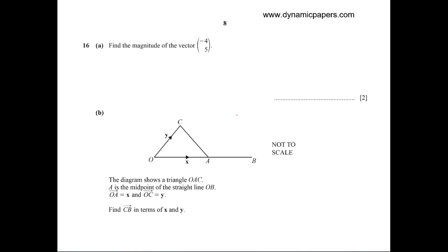Question 16a: Find the magnitude of the vector. To find the magnitude of the vector, we calculate negative 4 to the power of 2 plus 5 to the power of 2, which equals root 41, approximately equal to 6.4. This is part A of the question.